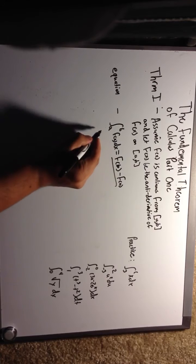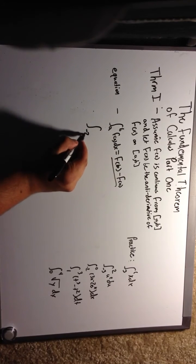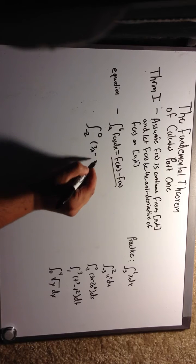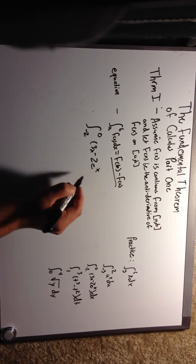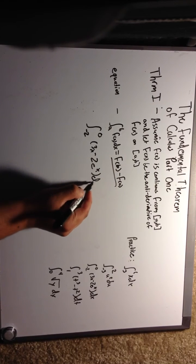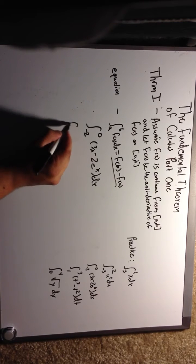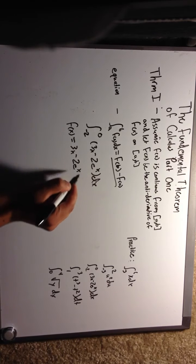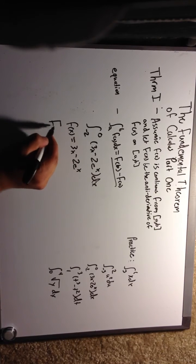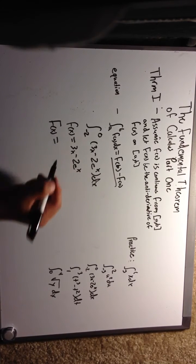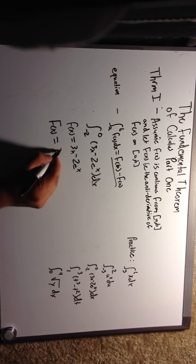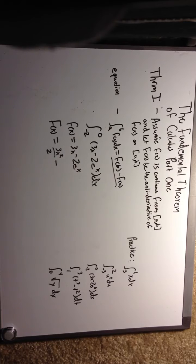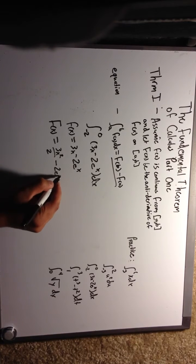Now we're going to find the integral from negative 2 to 0 of 3x minus 2e to the x, with respect to x. So we know that little f of x equals 3x minus 2e to the x.